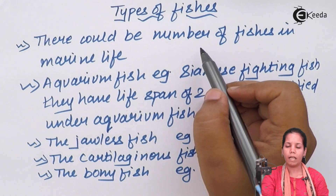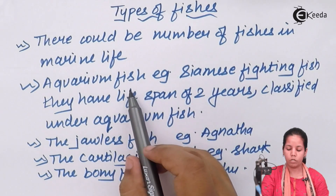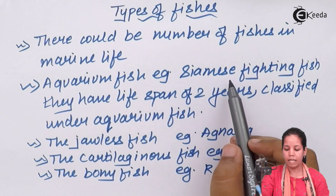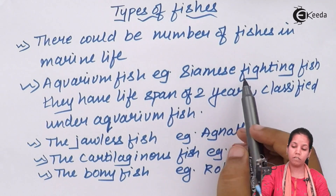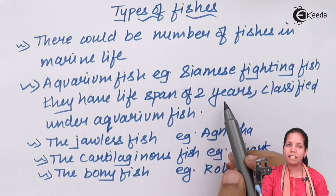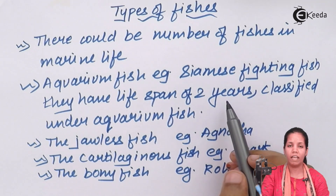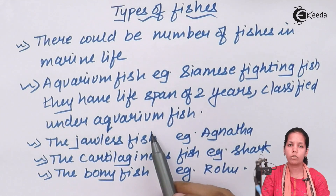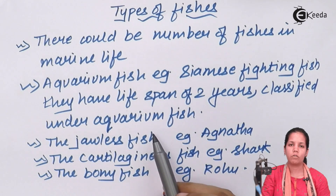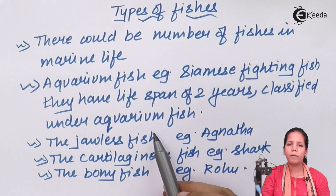If we observe the number of fishes in marine life, it is huge. One of the types is aquarium fishes. Aquarium fishes include the Siamese fighting fish, which has a lifespan of just two years. Its respiratory system and gills are very sensitive to the pollution index or abnormal oxygen levels. These are the fishes kept in aquarium ponds for observation — they are never consumed because they have very less body mass.